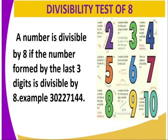We can have the divisibility test of 8. A number is divisible by 8 if the number formed by the last 3 digits is divisible by 8. For example, we can have a very long number like what we are seeing on the screen — that is 3,022,714. But we are not interested in the other digits; the digits of our great interest are the last 3 digits.